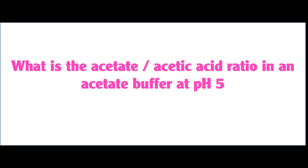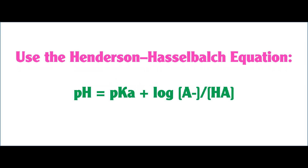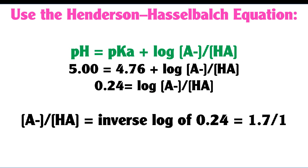What is the ratio of acetate to acetic acid in an acetate buffer with a pH of 5? Using Henderson-Hasselbalch: pH equals pKa plus the log of acetate over acetic acid. Plugging in: 5 equals 4.76 plus the log of acetate over acetic acid. Subtracting 4.76 from both sides gives 0.24 equals the log of acetate over acetic acid. Taking the inverse log of 0.24 gives a ratio of 1.7 to 1.